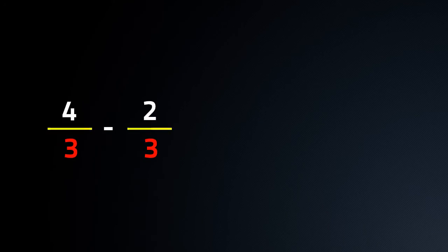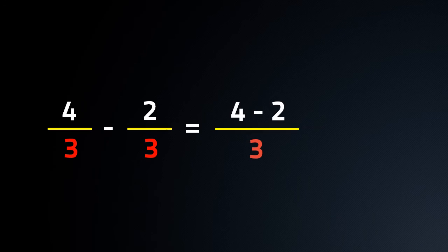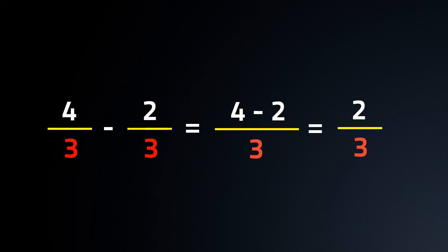Now, we shall solve our problem. Our problem is 4 by 3 minus 2 by 3. We shall subtract numerators: 4 minus 2, and we shall keep denominator same, i.e. 3. So, our subtraction is 2 by 3.